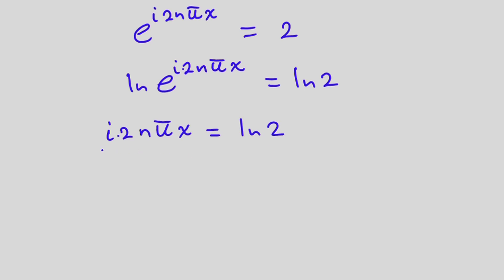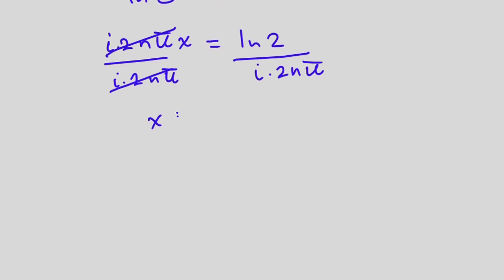We want the value of x, so let's divide through by i times 2n pi. So that these cancel out, we have x is equal to ln of 2 divided by i times 2n pi.